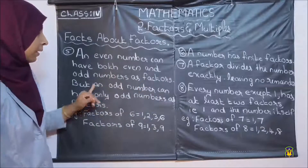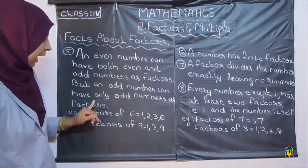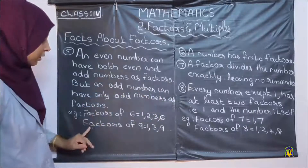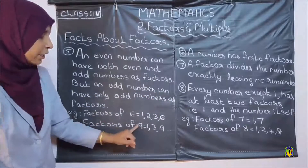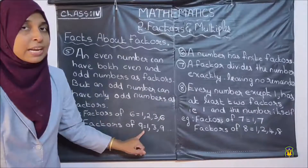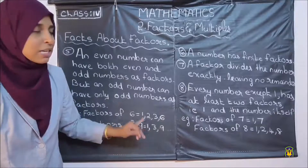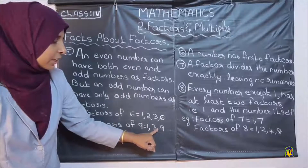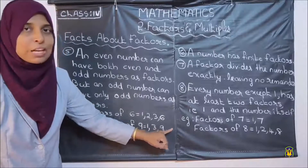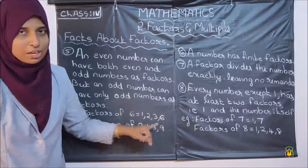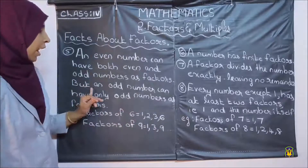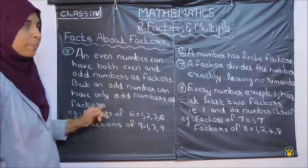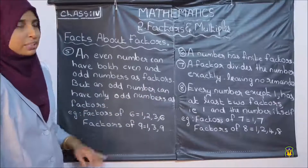But an odd number can have only odd numbers as factors. For example, factors of 9 — 9 is an odd number. Factors of 9 are 1, 3, 9 — only odd numbers. So an odd number can have only odd numbers as factors.